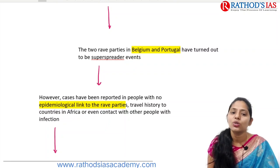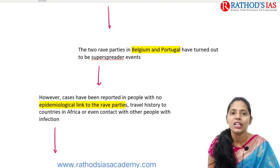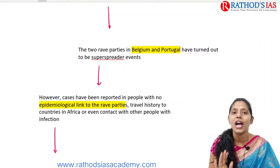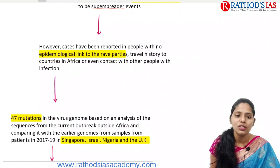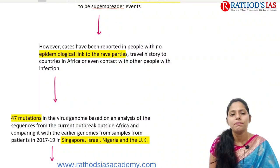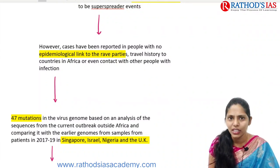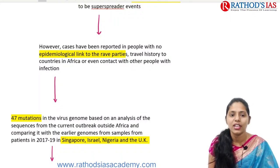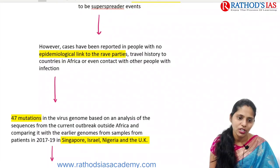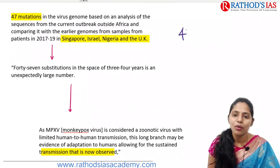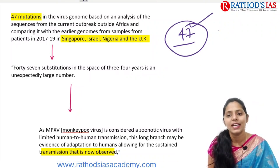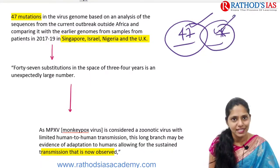Two rave parties in Belgium and Portugal turned into super spreader events, where the virus was transmitted to a large number of people. However, some cases were also reported that had no epidemiological link to these rave parties, no travel history to African countries, and no contact with other people — yet they got the infection. Regarding mutations, about 47 mutations were found in the virus genome based on analysis.